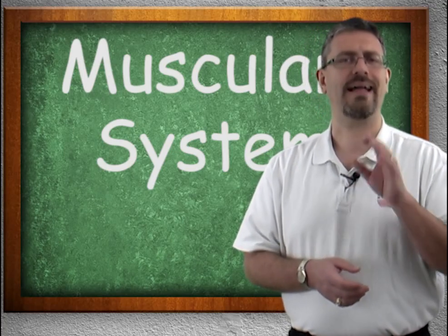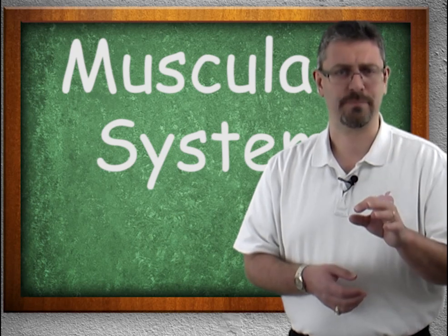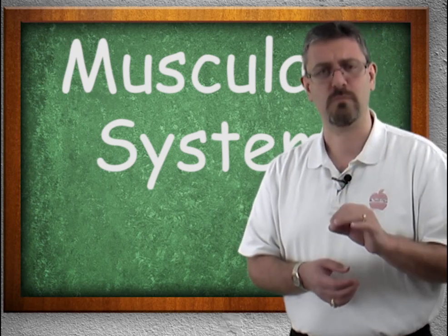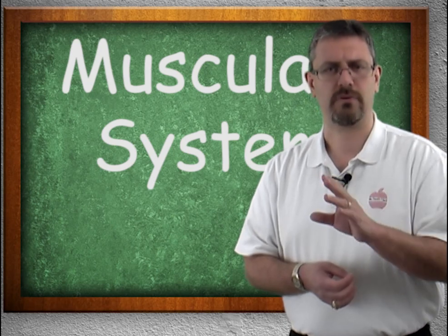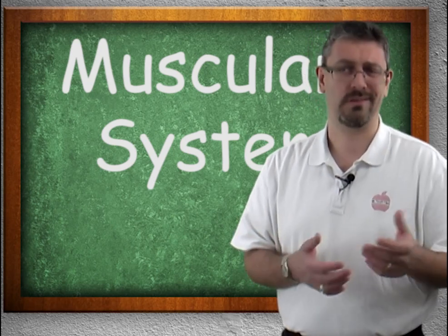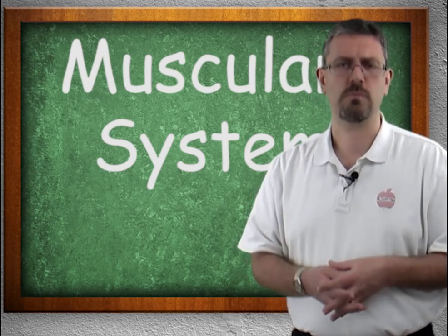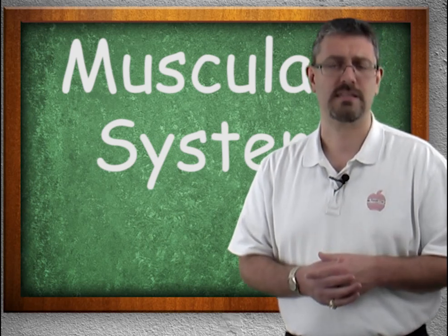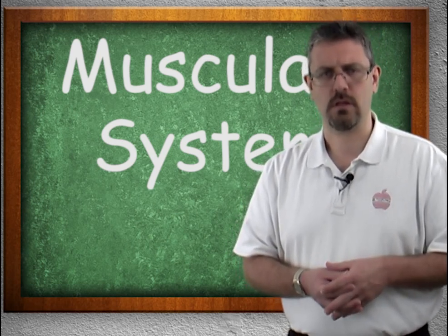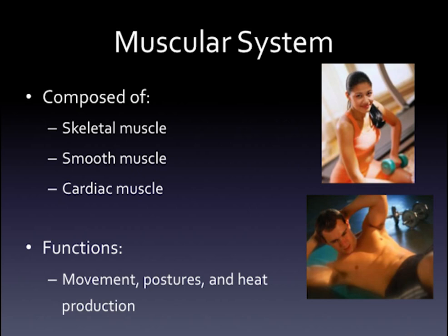When you're studying the muscular system, you typically take a look at the skeletal muscle tissue. The cardiac muscle and smooth muscle tissue are handled separately — for example, cardiac muscle is typically covered in the cardiovascular system, while smooth muscle can be covered in the cardiovascular system as well as the digestive system and some other systems. The function of the muscular system is movement, posture, and heat production.